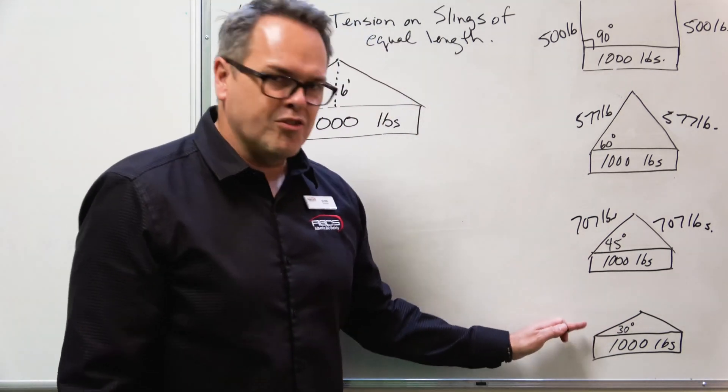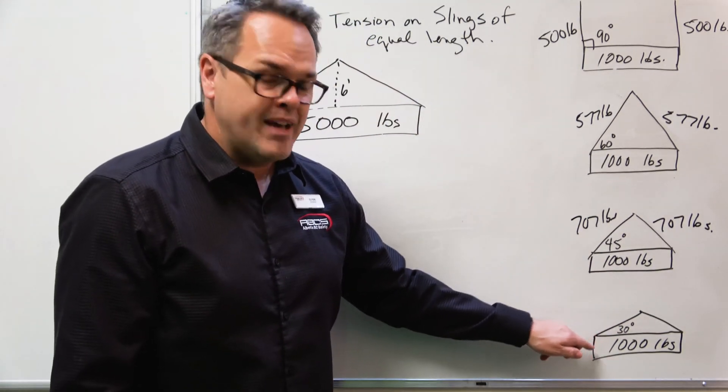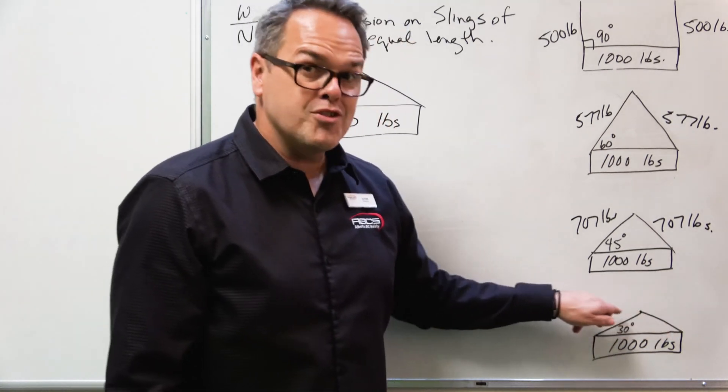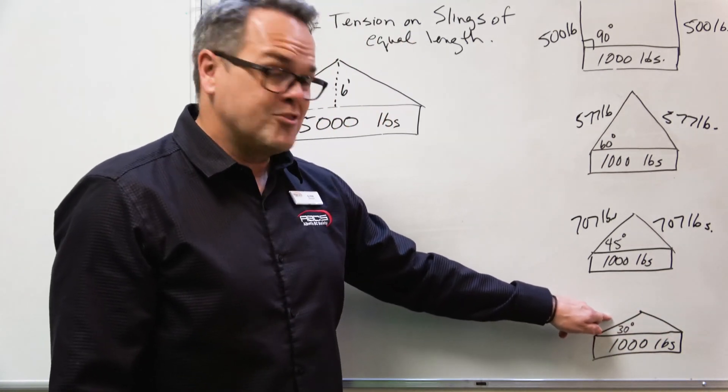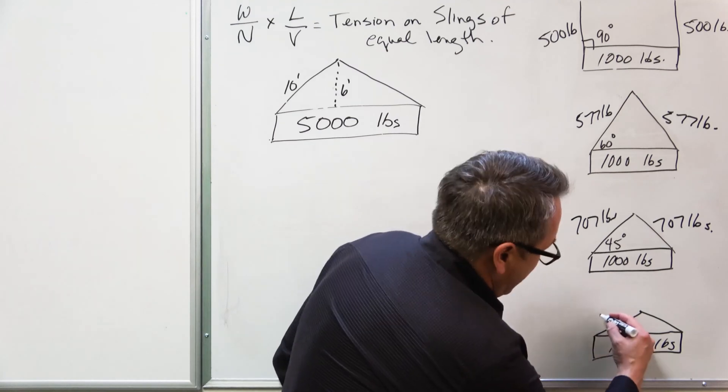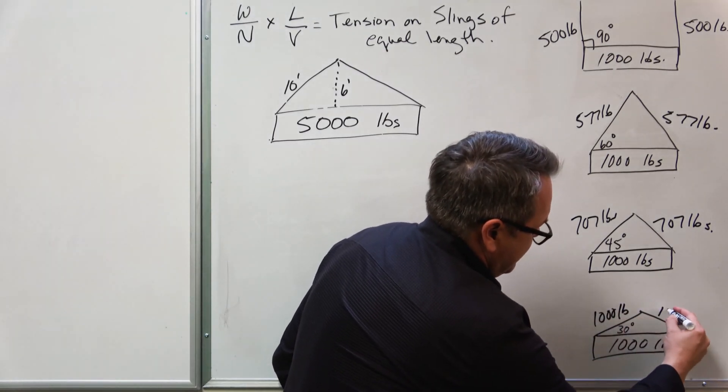Let's drop it down to 30 degrees or the critical angle. Still lifting a thousand pounds. If we were to measure how many pounds of force are on each of these slings, it's going to be equal to the load. It's going to be a full thousand pounds of force on each sling.